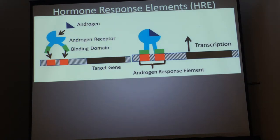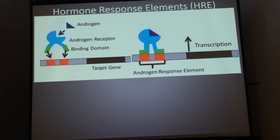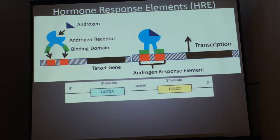The hormone response element is where hormones act through a process of receptors binding directly to the genome itself, causing up or down regulation of a particular gene. In this cartoon: the androgen enters the cell, binds to the androgen receptor, moves into the nucleus, and then binds to a specific region in the genome that can affect transcription. These binding sites are called the response elements.